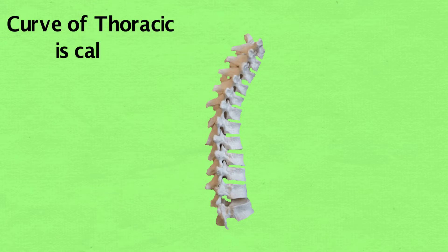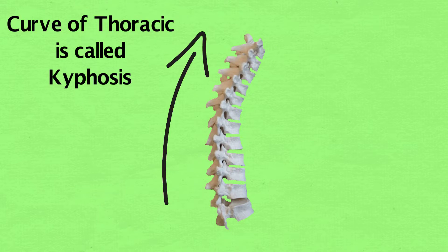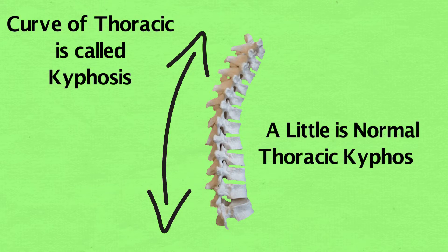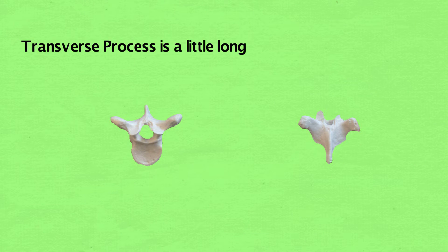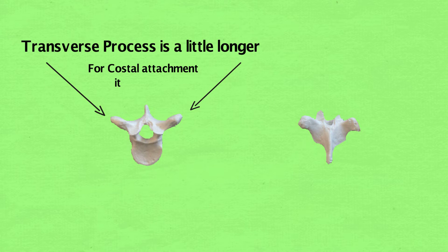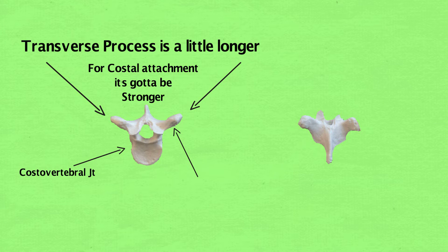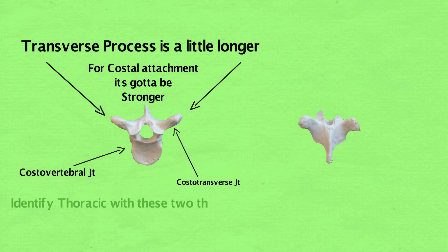The curve of the thoracic spine is called kyphosis — a little is normal thoracic kyphosis. The transverse process is a little longer for costal attachments, gotta be stronger. Costal vertebral and costal transverse joints — identify thoracic with these two things first.